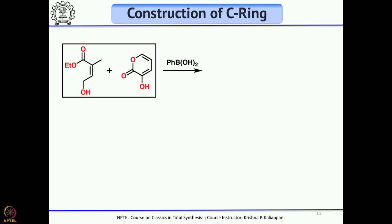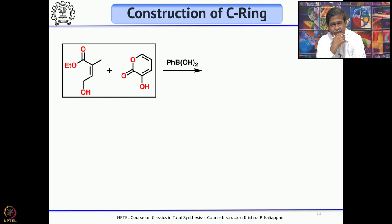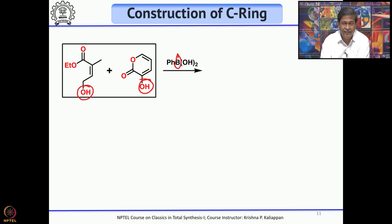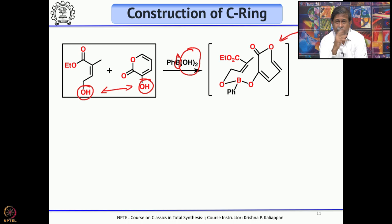Now for the C ring: the two starting materials are treated with phenylboronic acid, which has a high affinity for hydroxyl groups. The two OH groups replace the OH groups on phenylboronic acid to form a boron-bridged intermediate. This intermediate is drawn so that it can undergo an intramolecular Diels-Alder reaction facilitated by the boron bridge. In a Diels-Alder reaction, the endo isomer is the major product — the ester is endo to the newly formed ring.